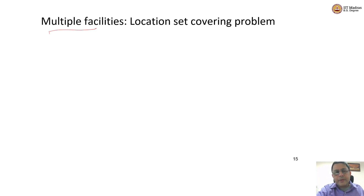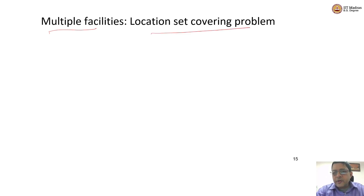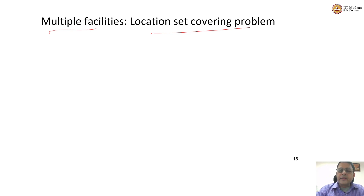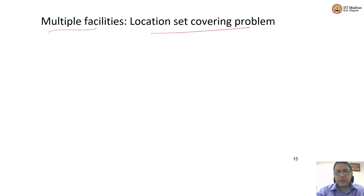There are multiple ways of formulating this problem and we are going to sequentially look at all the formulations. The first formulation we are going to look at is essentially formulating the facility location problem as a set covering problem. Disclaimer: set covering problem is a much more generic problem and you can refer to the generic formulation. The idea is how can you cover the elements of a set. We are going to use the set covering problem in the context of our facility location specifically.